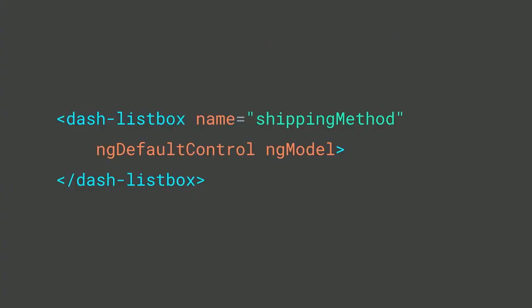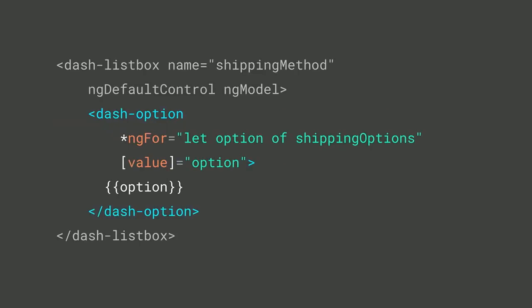For the dash-listbox, which matches the API of an input box, all I have to do is add the directive ng-default-control along with ngModel. This tells Angular forms the API it needs to listen for changes and make updates. We can even stamp out dash-option children using standard Angular syntax like ngFor — here we're iterating through a list of shipping options, printing out each option with its value set.